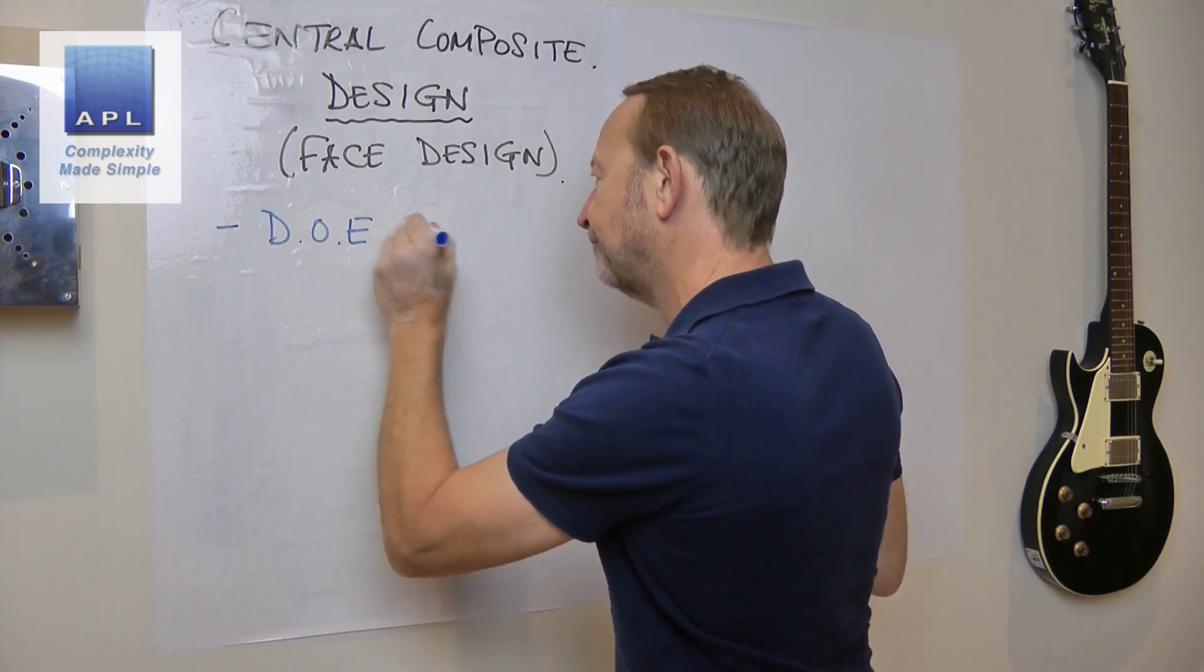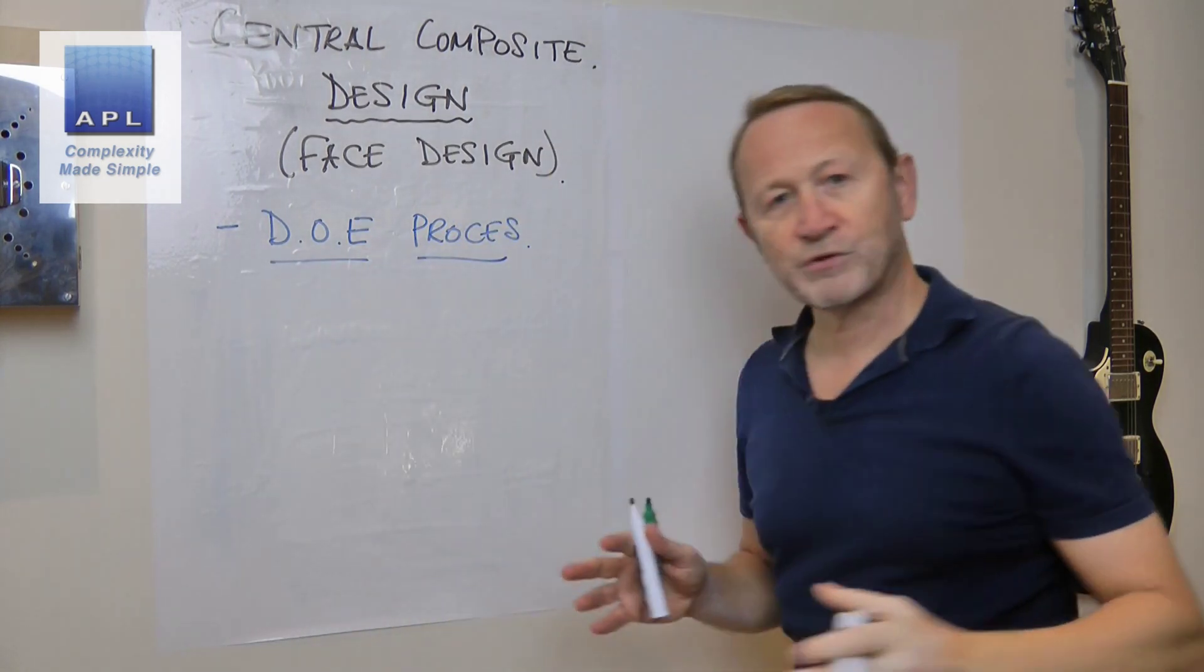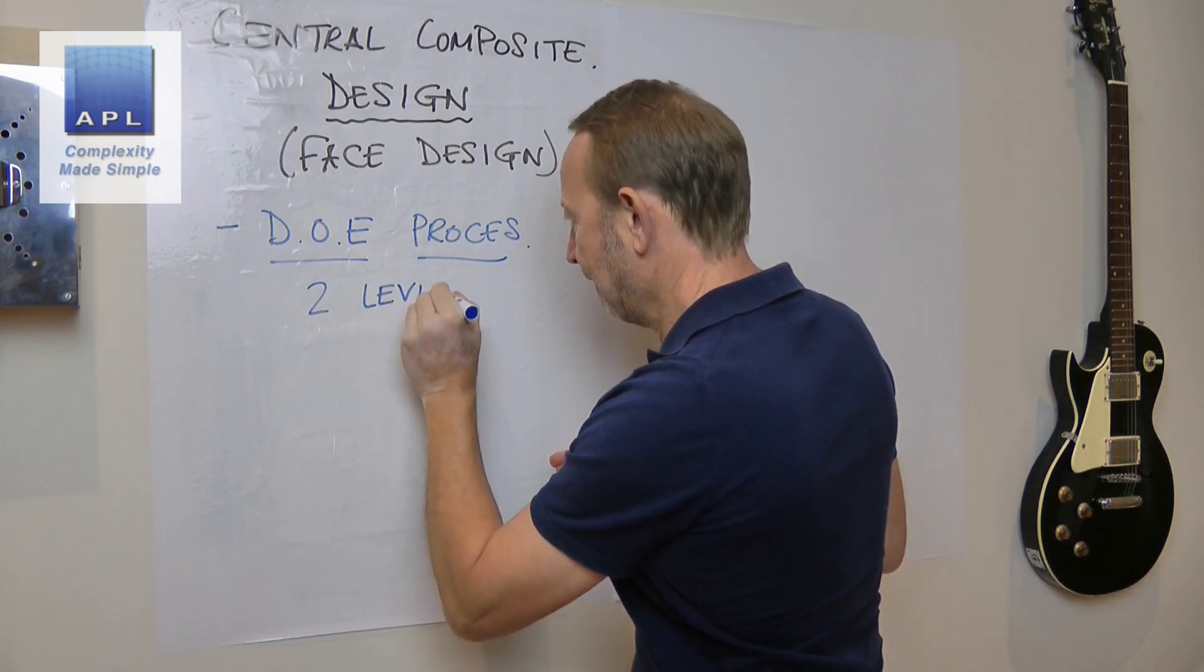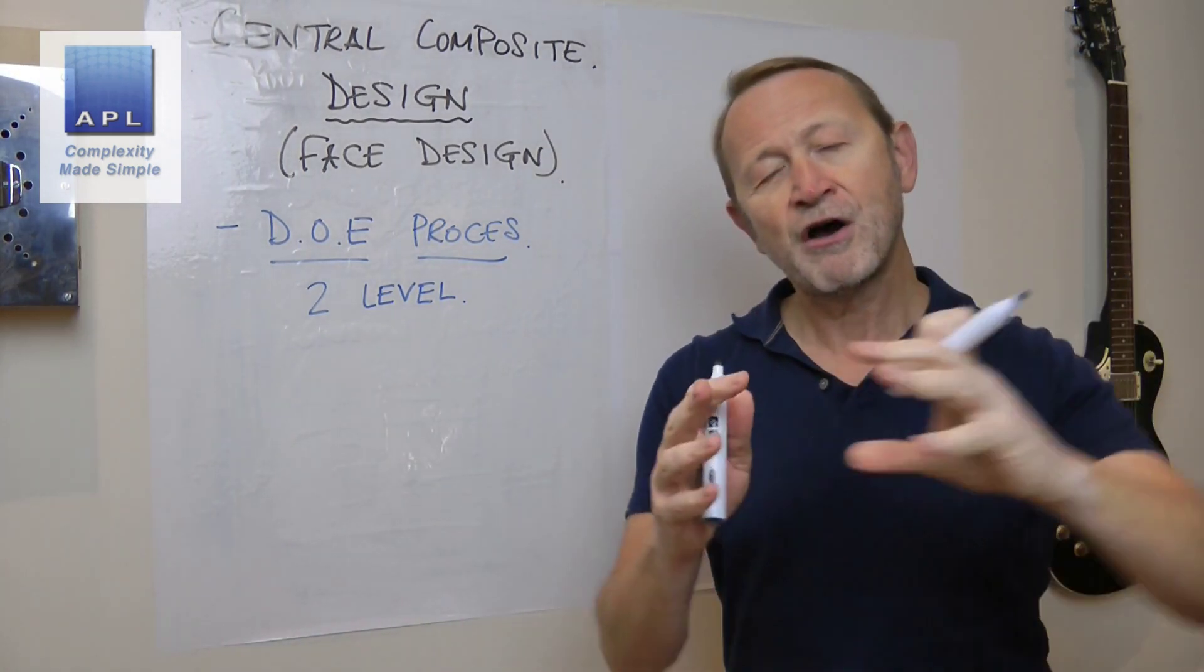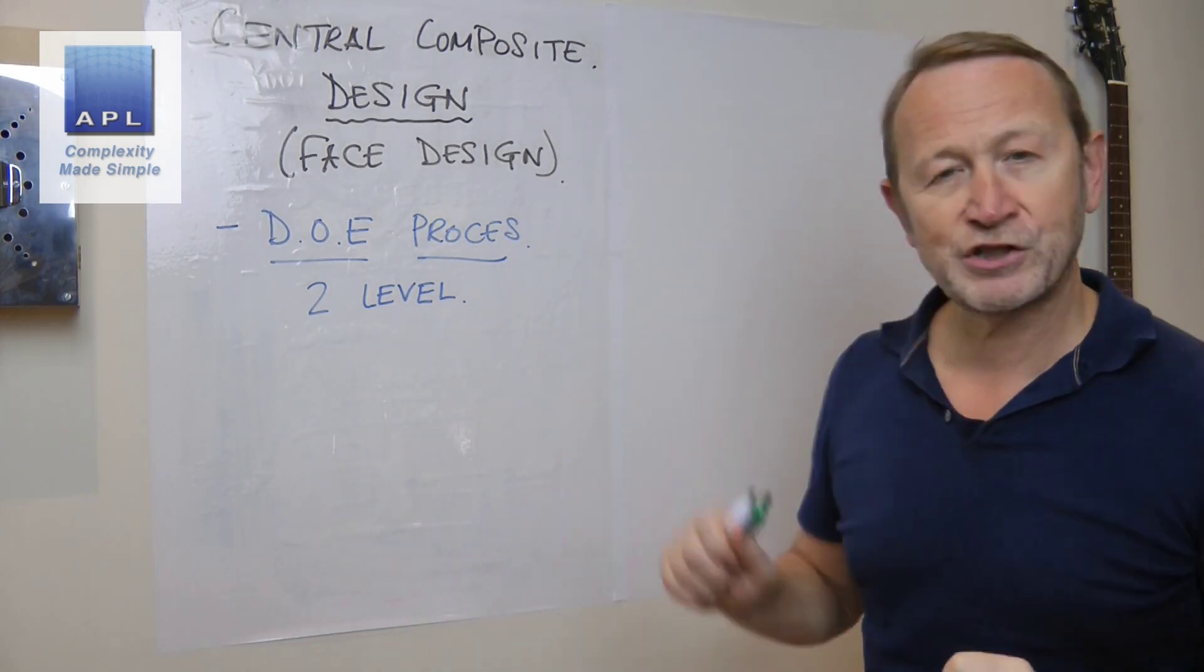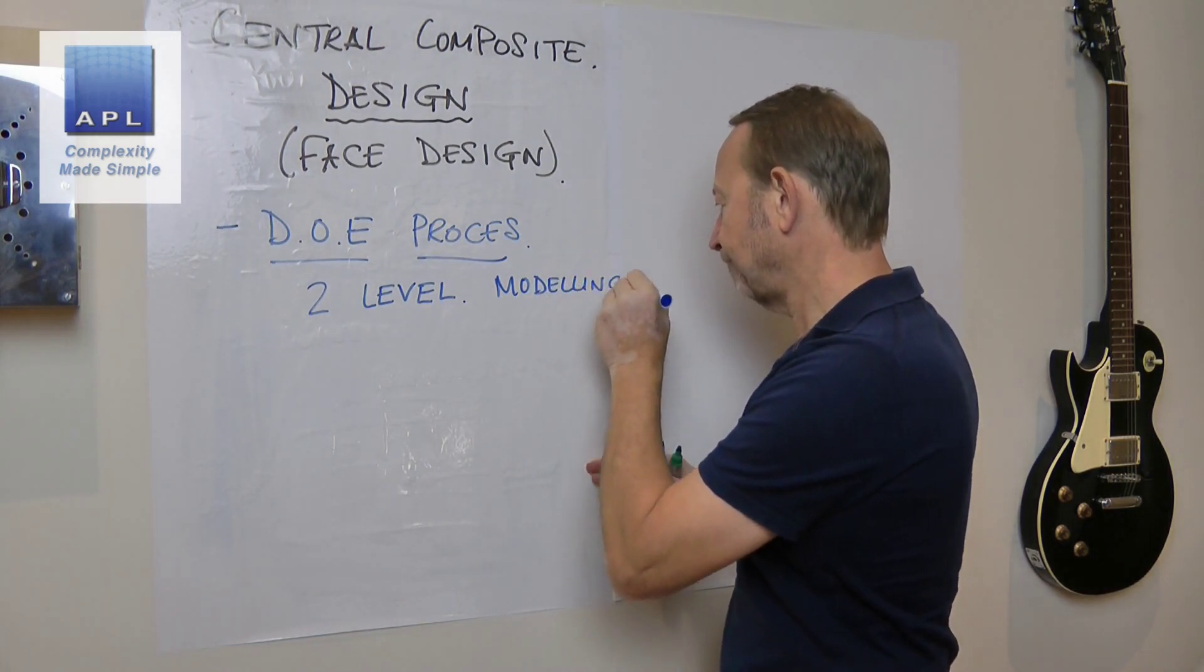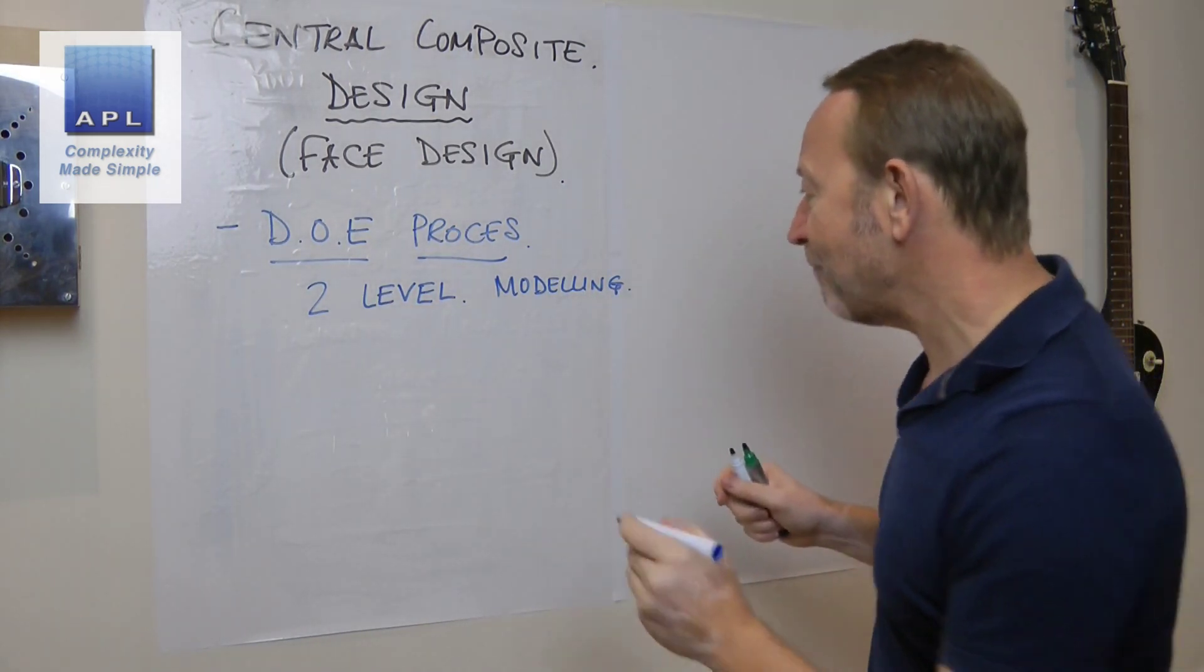So my normal DOE strategy. My DOE process is always to start simple. So I always start two level. And for the purpose of this video, I'm going to suggest that we start two level modeling, I would often start two level screening. And with this client, that's where we started, we were screening at two level first, then we started modeling at two level. We're going to just assume that we're two level modeling because this is where my problem started.